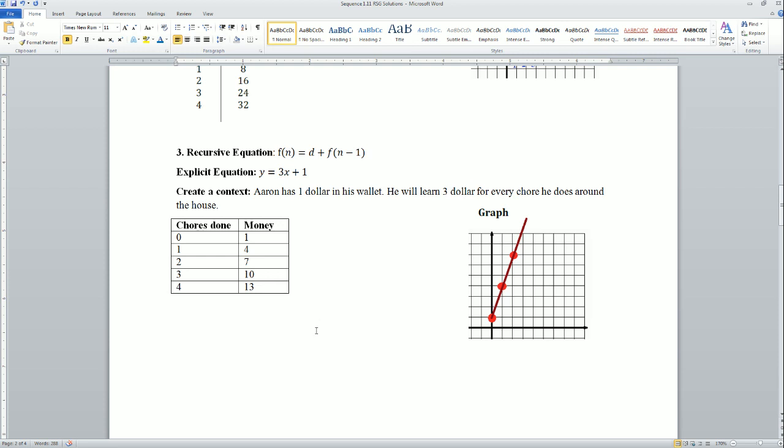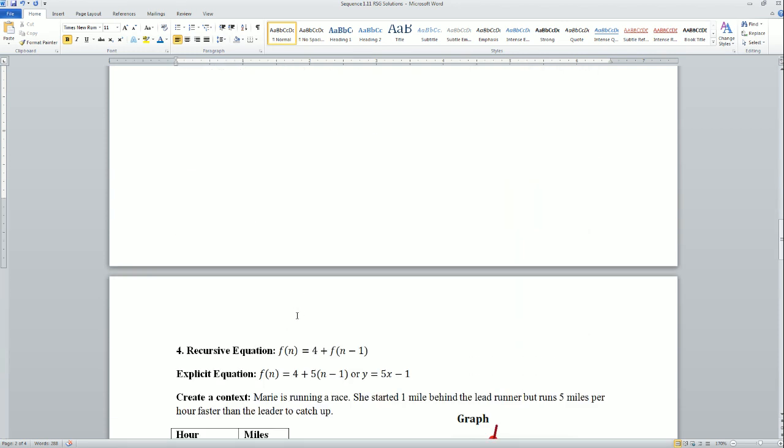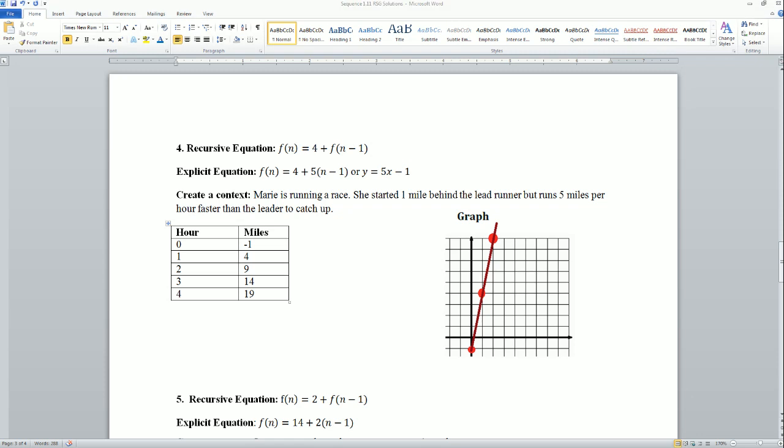Next, number four gives us the explicit, and it asks us for the recursive, creating the context as well as the chart and the graph. So from here, y equals 5x minus 1 is very beautiful because it already gives us it in y equals mx plus b format. I made it there, so I plug it into my chart like before to generate my values, I graphed it.